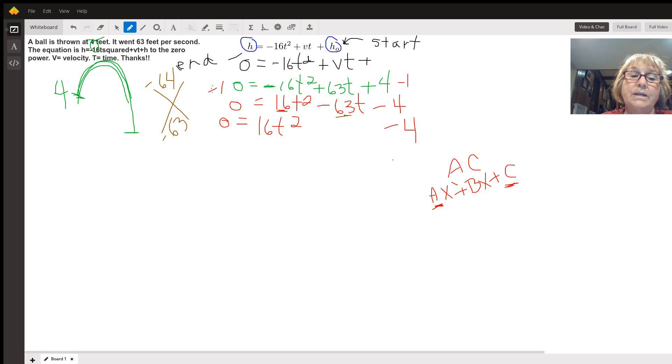I have my kids make a little X like this. So I want factors of negative 64 that add up to the middle term of negative 63. Well, that would need to be a negative 64 and a one because if you multiply negative 64 times one, you'll get negative 64. If you add negative 64 plus one, you'll get a negative 63. So in place of this negative 63 T right here, in place of that, I'm going to put in these two factors. I'm going to put in a negative 64 T plus a one T.